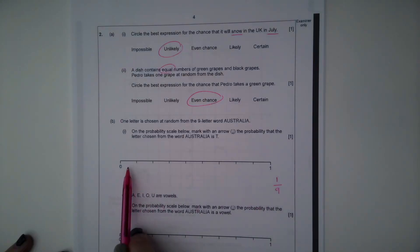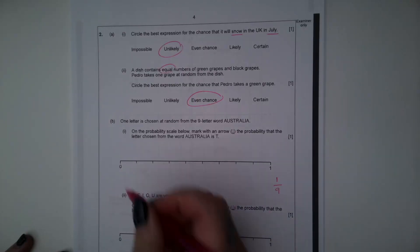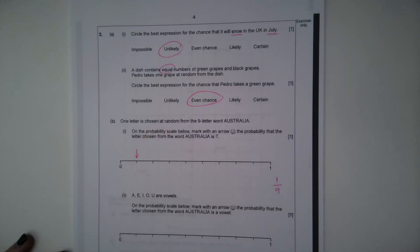So let's have a look at this probability scale. We're going from zero to one. We've got one, two, three, four, five, six, seven, eight, nine equidistant spaces, nine equally spaced lines. So each one of them must be equal to one-ninth. So we'd have one-ninth, two-ninths, three-ninths, four-ninths. This is one-ninth. So we're going to pop our arrow on that first line.